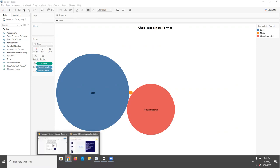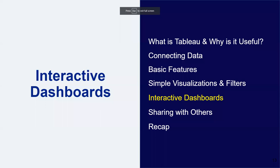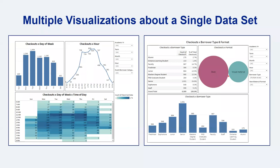Once you have a few visualizations that make sense to display together on a single screen, you can create a dashboard — kind of like the dashboard in your car so you can see multiple things at once. On this slide you can see I created six different visualizations; six was more than I wanted on a single dashboard, so I elected to create two dashboards. Both dashboards are in the same Tableau file but will be displayed differently upon clicks. You can set the dashboard so that filters will apply to all of the visualizations displayed.